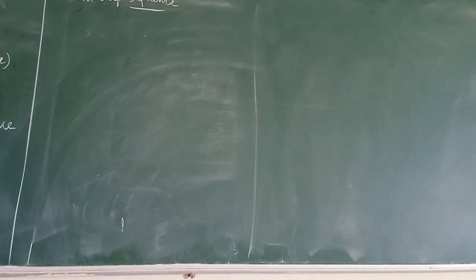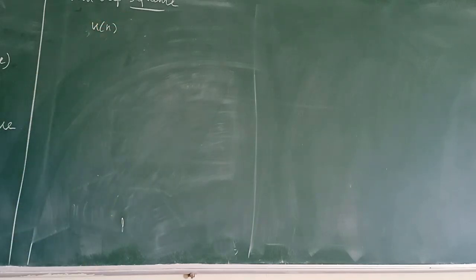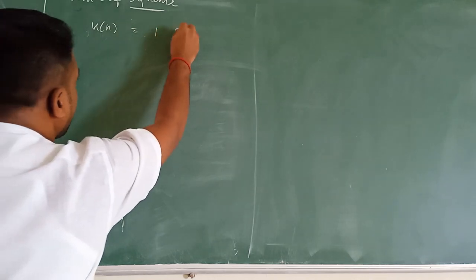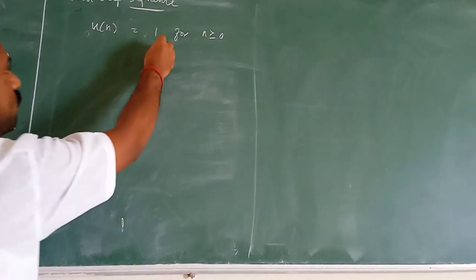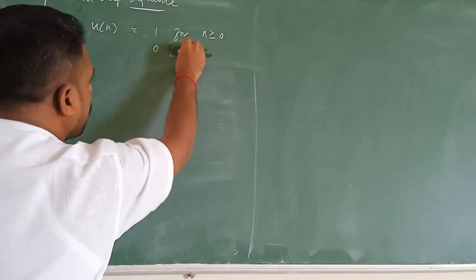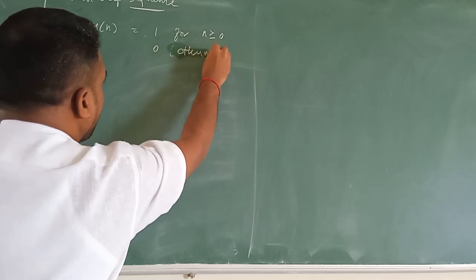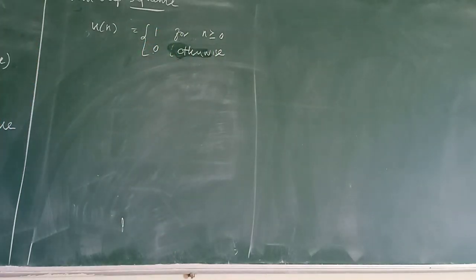Unit step sequence is represented as u(n) that is equal to one for n greater than or equal to zero, zero otherwise. This is the unit step sequence.